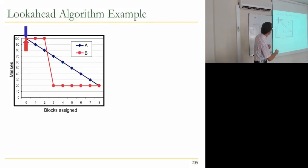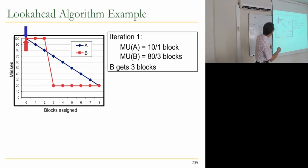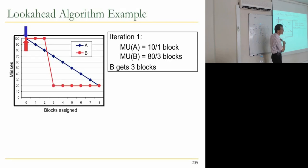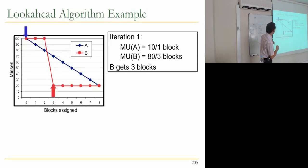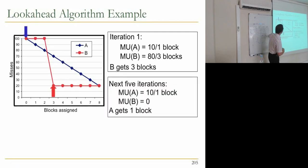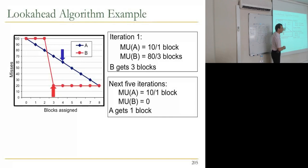Taking the same curves with the look-ahead algorithm: in iteration one, marginal utility of A is 10/1 (best utility from one more way giving 10 fewer misses), while marginal utility of B is 80/3 because allocating three blocks gives 80 miss reduction. Since 80/3 is larger than 10/1, B gets three blocks first. After that, B's marginal utility is 0, while A's is 10/1, so in the next iterations A gets all remaining blocks. This gives much better miss rate reduction.